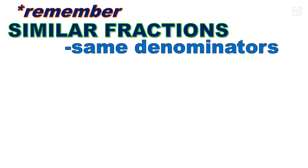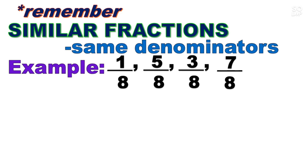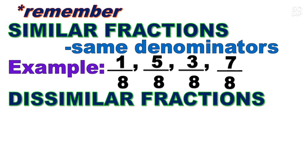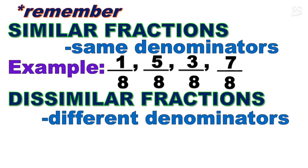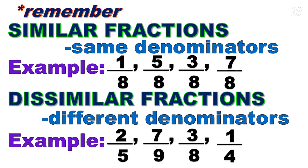Let's recall and remember that we have similar fractions. When we say similar fractions, they have the same denominators. For example, we have 1 over 8, 5 over 8, 3 over 8, 7 over 8 — same denominators. Then we have dissimilar fractions — different denominators. For example: 2 over 5, 7 over 9, 3 over 8, 1 over 4.